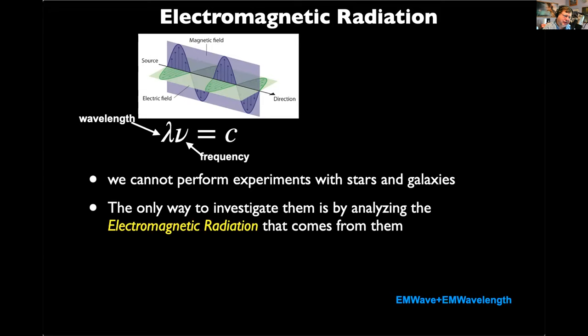Way beyond the scope of this course, but a changing electric field will induce a magnetic field, and a changing magnetic field will induce an electric field. This is exactly why motors and generators work. Every time you turn on a motor, you're using the fact that a changing electric field makes a magnetic field and vice versa. Any time you turn on a light, generators are converting electric and magnetic fields into an electric charge moving down the wire.